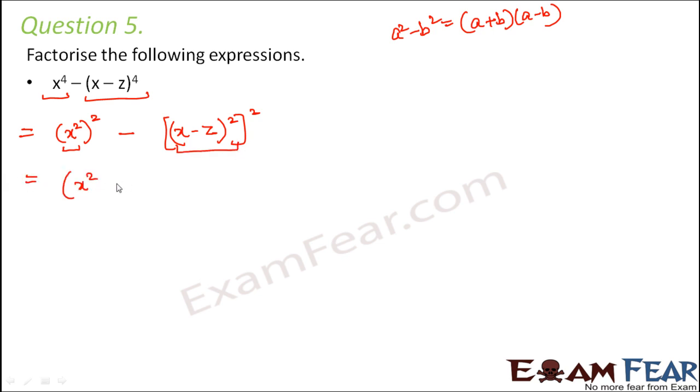So this becomes a plus b that is x square plus x minus z whole square. This is a plus b into a minus b that is x square minus x minus z whole square.